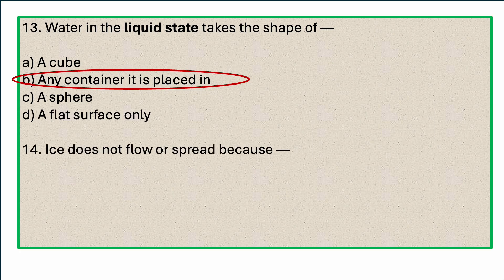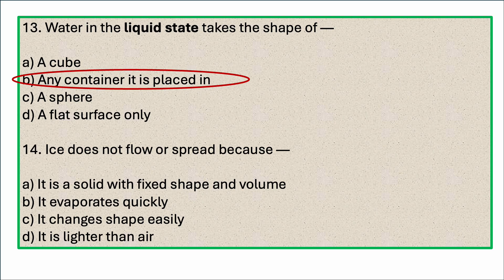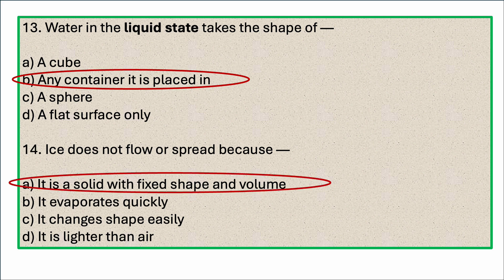Ice does not flow or spread because — options are: it is a solid with a fixed shape and volume; it evaporates quickly; it changes shape easily; it is lighter than air. Which is the correct answer? Ice does not flow or spread because it is a solid with a fixed shape and volume.